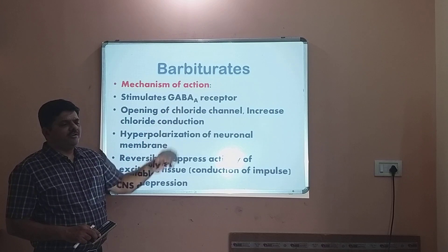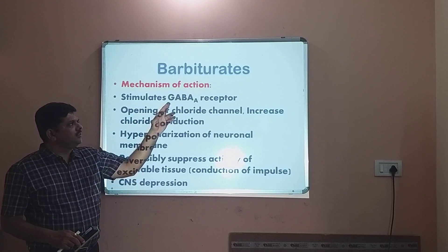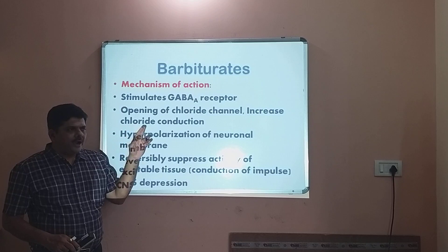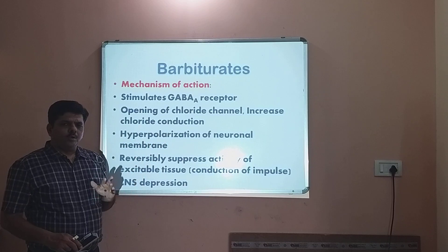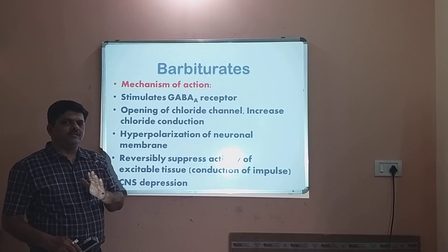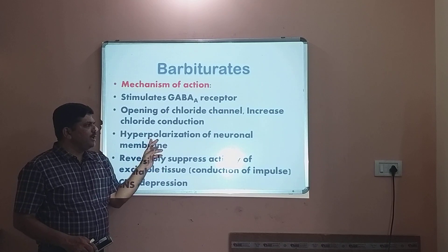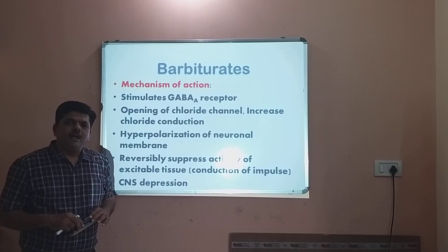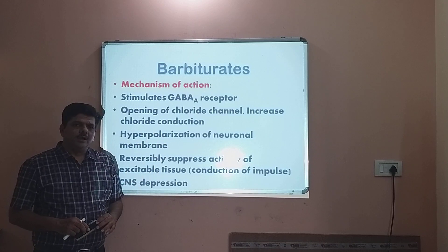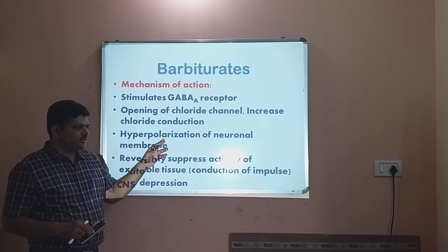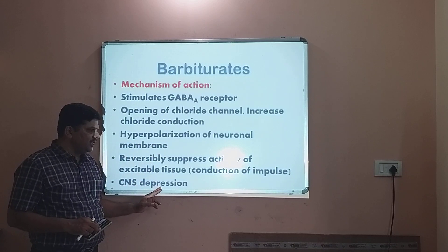After binding with the GABA-A receptor, the chloride channel will open, and it increases chloride conduction. Chloride ions enter the neuron, and as a result, the neuronal membrane is hyperpolarized. Hyperpolarized means the membrane becomes more negative. When there is hyperpolarization, impulse cannot pass, and that produces CNS depression.